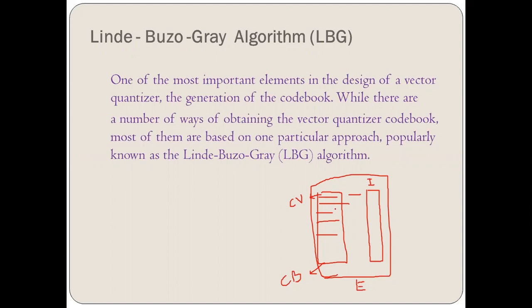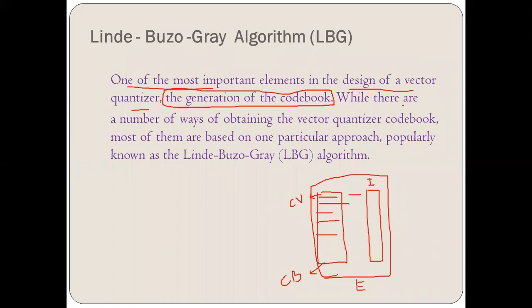For that particular purpose, we are using the LBG algorithm, that is the Linde-Buzo-Gray algorithm. That is why one of the main and most important elements in the design of a vector quantizer is the generation of the code book. While there are a number of ways of obtaining the vector quantizer code book, most of them are based on one particular approach, popularly known as the LBG algorithm. The main approach on which every algorithm is based is called LBG, so we need to understand the LBG algorithm to understand the other different approaches for generation of the code book.